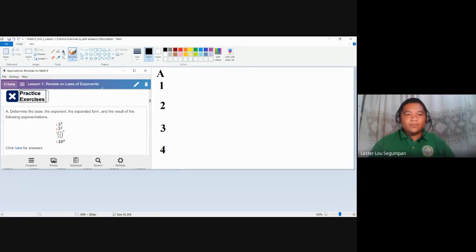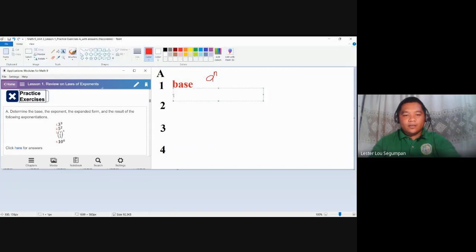For number one, any exponential notation or in short exponentiation is in the form of A to the power of N, right? A to the power of N, where A here is our base and the N is our exponent. The exponent tells us that the number, the value of the exponent tells us how many times the base is being multiplied to itself. Exponentiation is, again, the condensed form of repetitive multiplication. So for number one, for the base, we have here exponent.